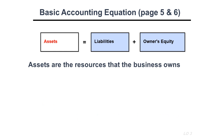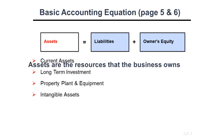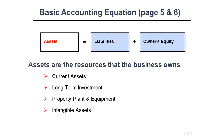Assets are the resources that the business owns. Anything the company owns should be recorded under assets, such as vehicles, cars, equipment, supplies, office supplies, inventory, and cash. All the resources that the company owns are classified into four categories: current assets, long-term investment, property, plant and equipment, and intangible assets.